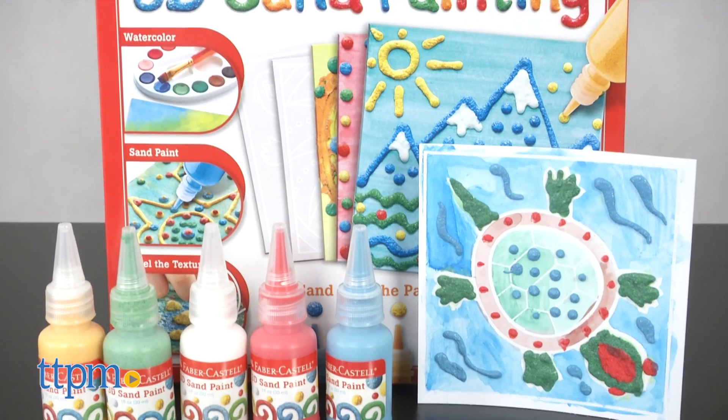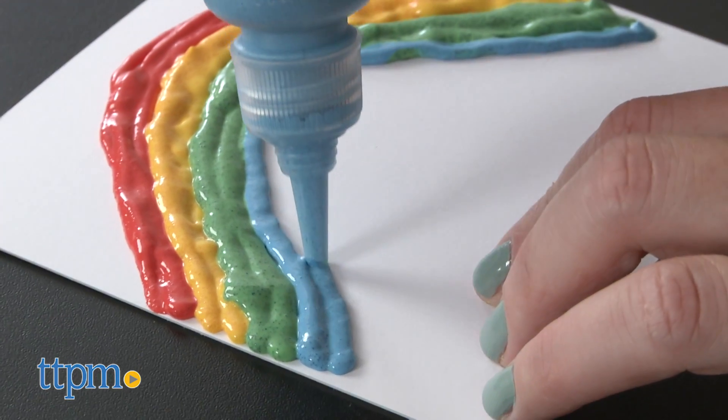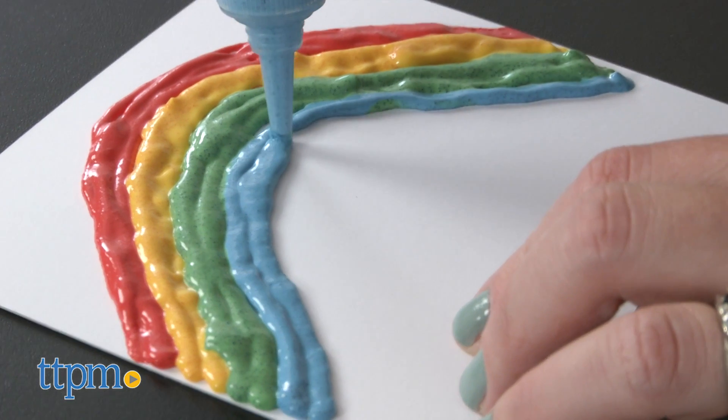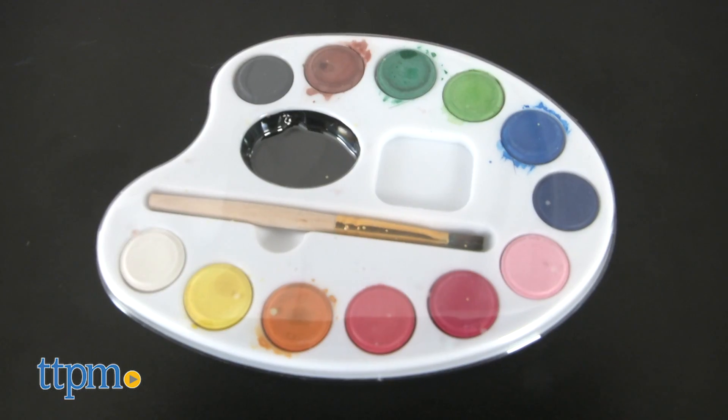This gives kids ages 6 and up the tools they need to make 5 sand paintings. The sand is already mixed into the paint, so all kids have to do is squeeze it from the bottle onto the blank design boards.